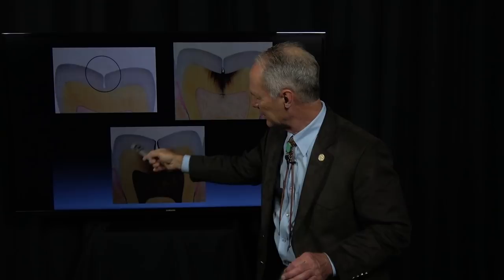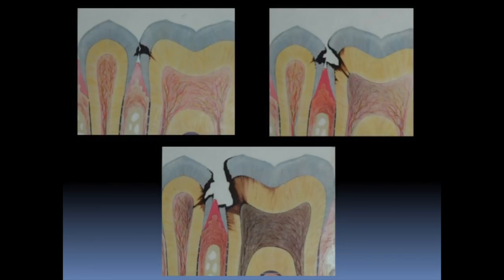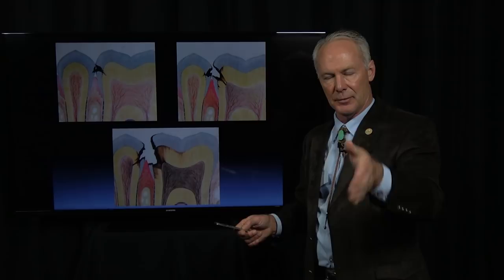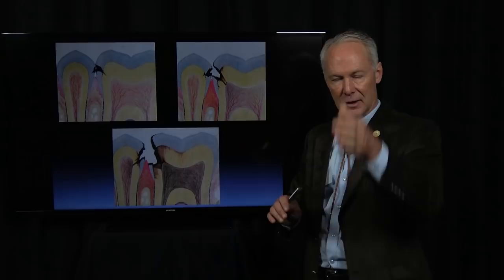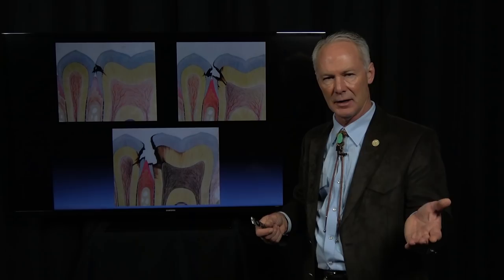Here's interproximal decay. The places you get decay are on the occlusal surface, the interproximal between the teeth, and on the facial. As dentists, we can tell what kind of sweet the patient's eating by where the decay is. If it's on the occlusal or in between the teeth, usually that's a sticky sweet — Jolly Rancher, Gummy Bear, caramely-goo type stuff. If it's on the facial surface, that's generally Coca-Cola, Mountain Dew, sucking on mints all day long, sucking on cough drops — that's at the gum line.